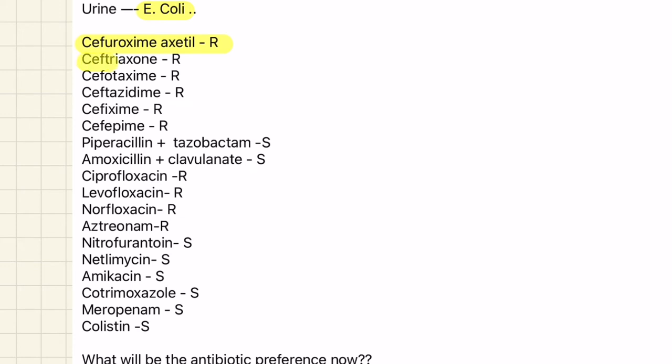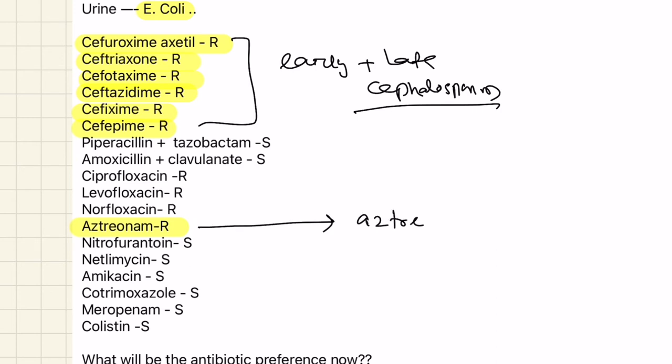It's also resistant to ceftriaxone and cefotaxime - third generation, ceftazidime - third generation, and cefepime - fourth generation. Both early and late cephalosporins are affected. As discussed in the definition, they'll be resistant to aztreonam also. Early and late cephalosporins including third and fourth generation plus aztreonam classify this organism as ESBL.